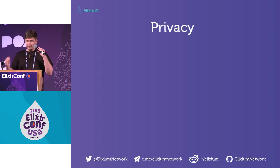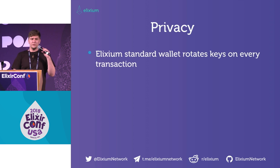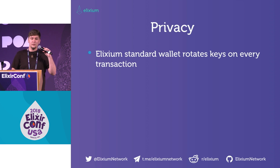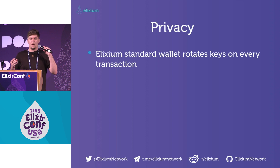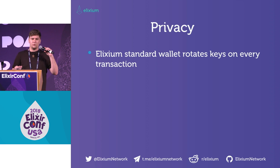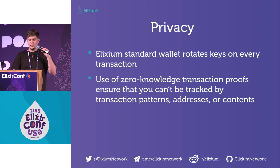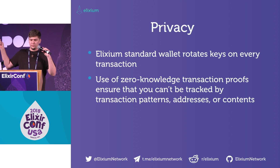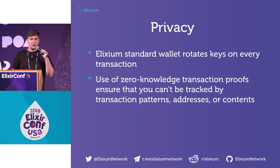It also comes with privacy. We rotate private keys on every transaction, so every time you create a transaction, you do retain existing keys so that if someone happens to send you two transactions to the same address, you do get to keep that coin. But also every time you try to send someone a wallet address, there'll be a new one just to make it harder for you to get tracked. We also use zero-knowledge proofs to make sure that you can't be tracked by transaction patterns, addresses, or contents.